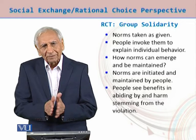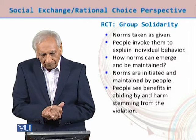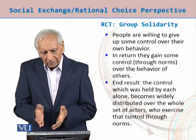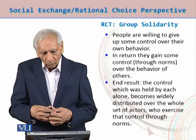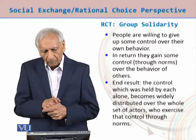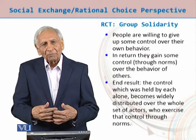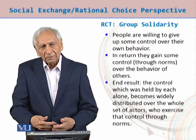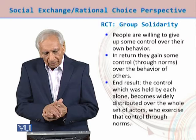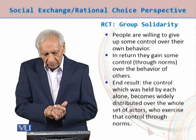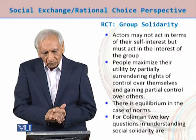People see benefits in abiding by norms and harm stemming from their violation. They try to give up some of their control over their own behaviour when norms are developed by others, doing so because they expect to get a more conformist kind of society and conformist kind of members. The control which was held by each alone becomes widely distributed over the whole set of actors, who exercise that control through norms.